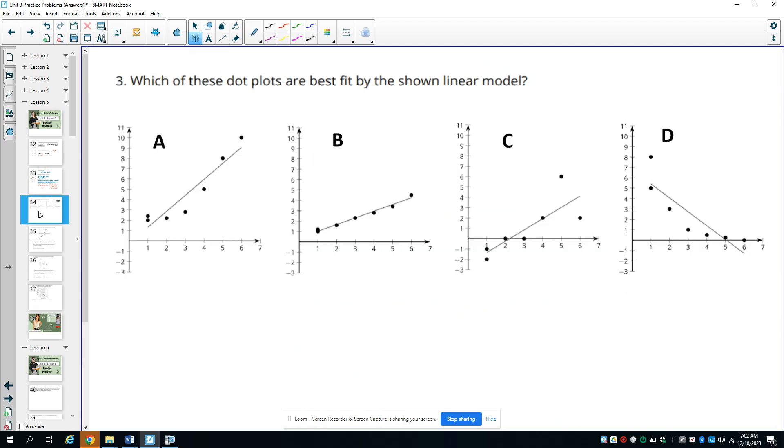All right, then number three says which of these dot plots are best fit by the shown linear model. And remember the best fit means it's close to the most dots. So this one, we see quite a few of them off. This one, most of the dots are touching the line. So this one's really good. This one has quite a few below and above. And then this one again is missing quite a few of them. So B is the one that fits this one the best.